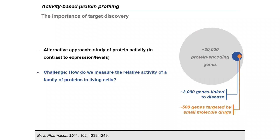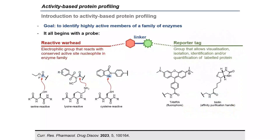An alternative approach to finding new targets is to study links between protein activity — often enzyme activity — and disease, rather than protein expression levels. The challenge is: how do we measure the relative activity of a family of proteins in living cells? Activity-based protein profiling aims to identify highly active members of a family of enzymes using probes. Probes are small molecules used in biological assays to investigate biological systems — the powerhouse of chemical biology. In activity-based protein profiling, probes have three parts: a reactive warhead, a linker, and a reporter tag.